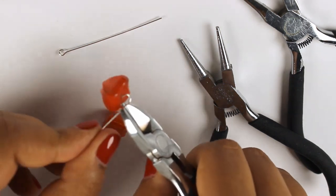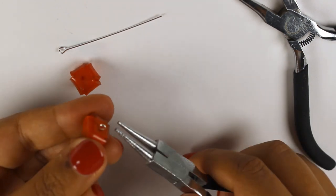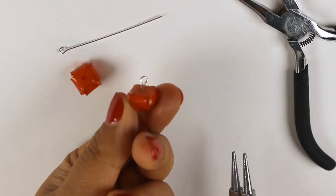I'm going to use the round nose plier to close the loop and just slightly adjust it so that it lies straight against the berries.